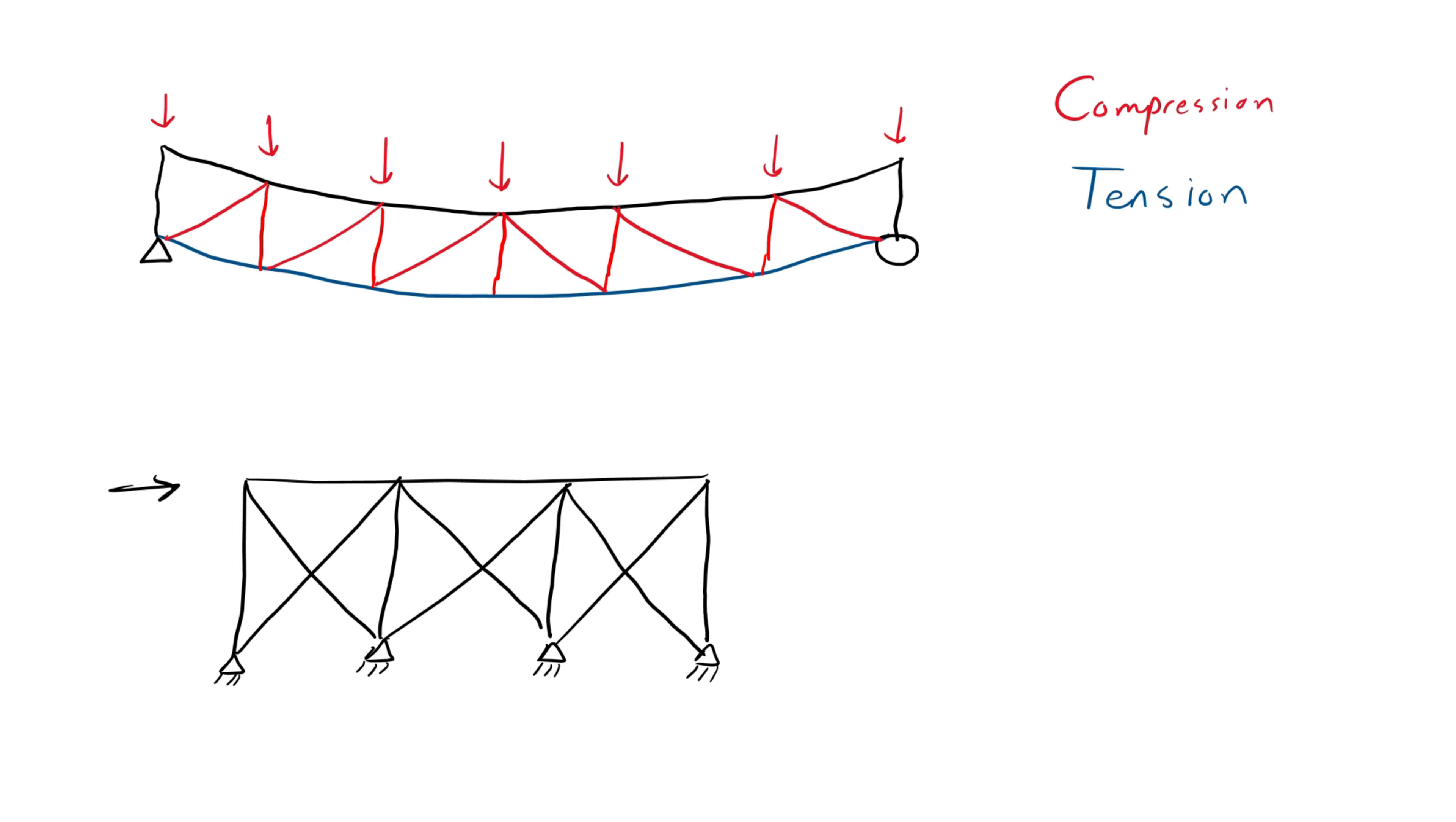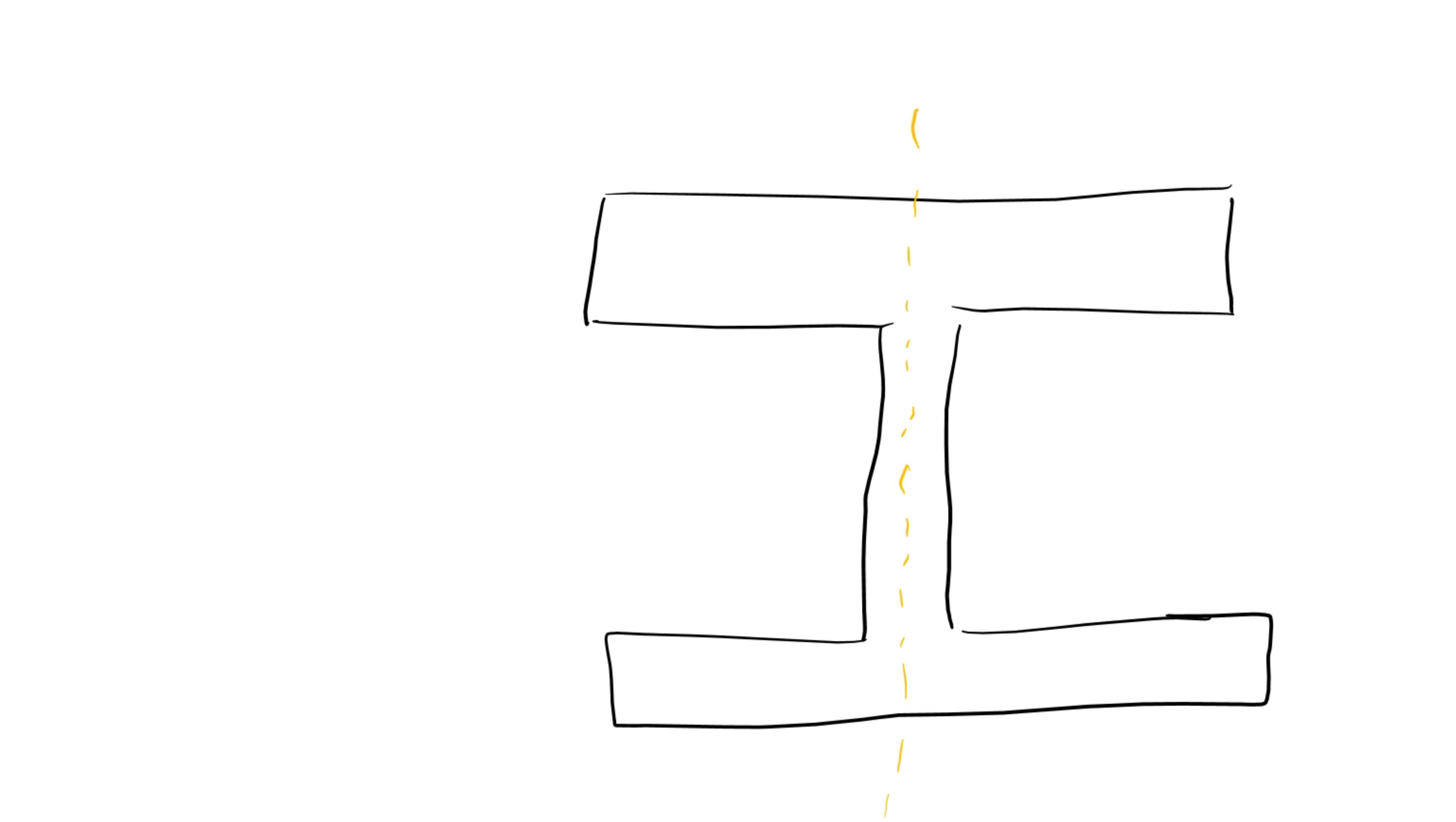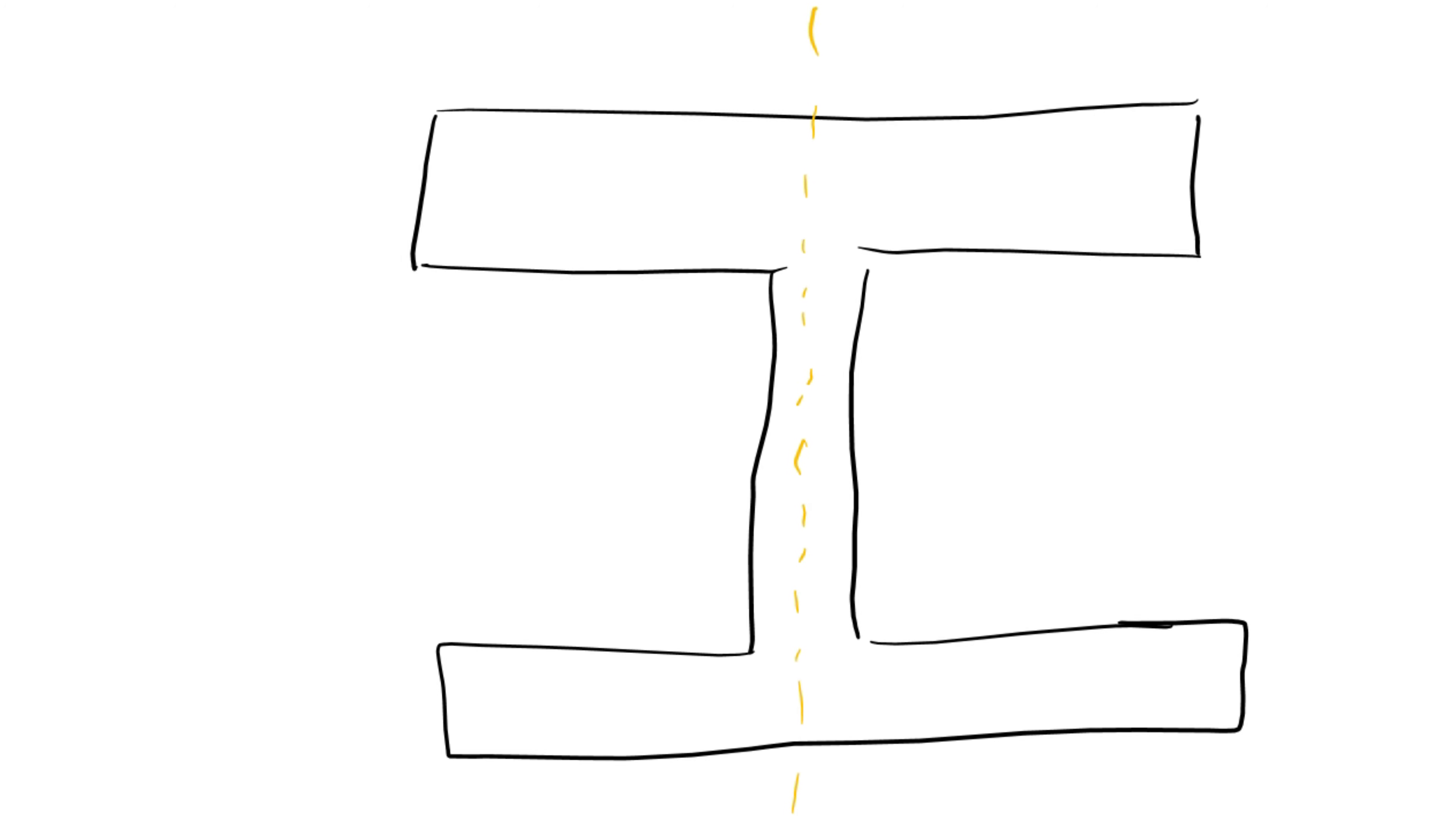Compression members are also used in trusses, where the loads inside the members are assumed to be purely axial, which means either compressive or tensile, because the member ends are hinged. Another use of compressive members are bracing systems that are used to resist lateral forces in frames, flooring and roofing systems or other structures as well.